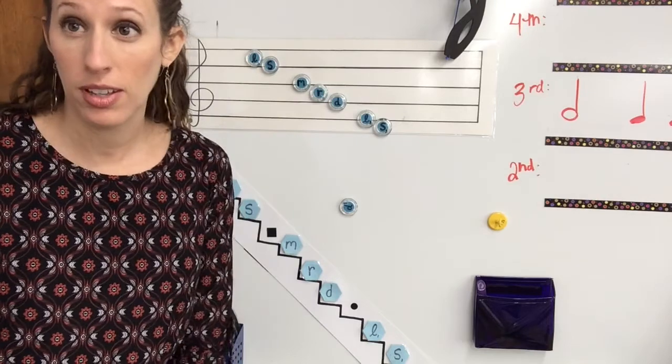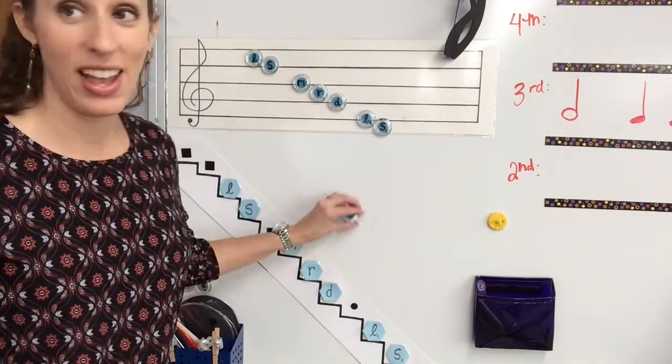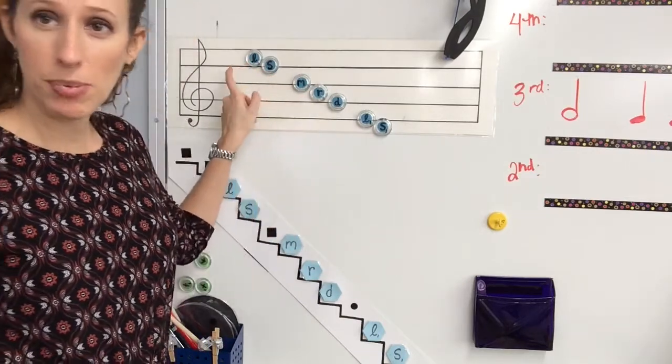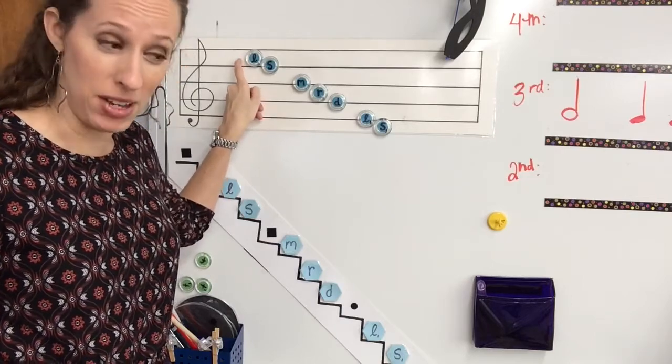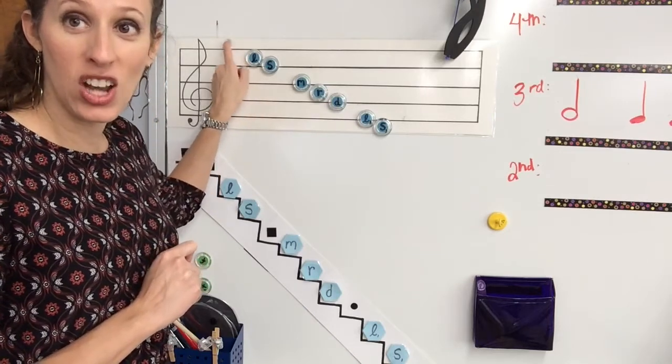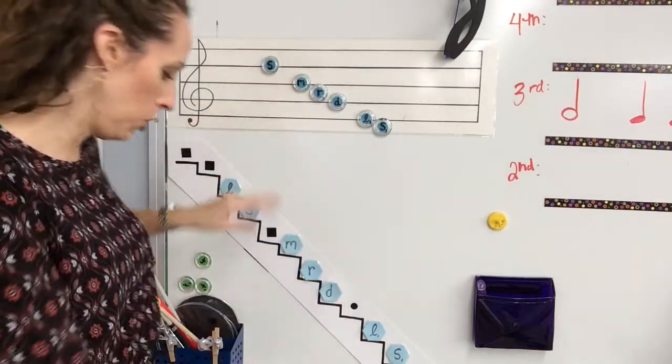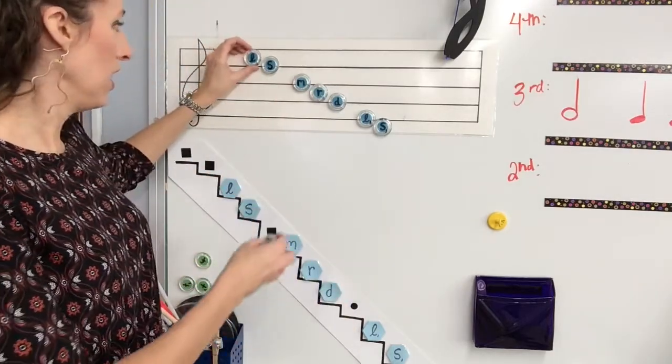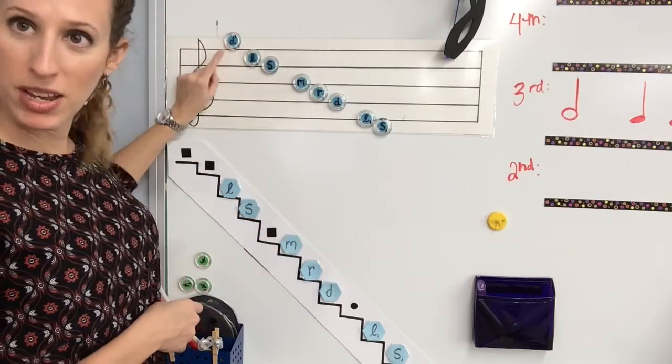La to doe is a skip. So if we have a skip, it goes space to space or line to line. Now here's the problem. There don't appear to be more spaces above la. But musicians are clever. We consider sitting on top of that line the top space. La lives in there. Doe, right on top of the space right there.